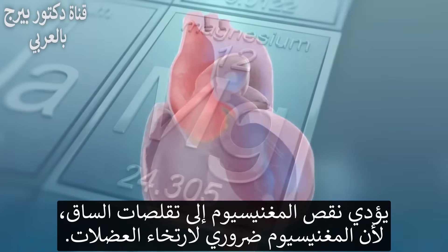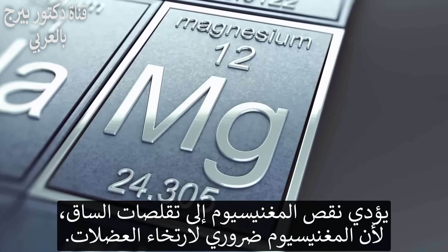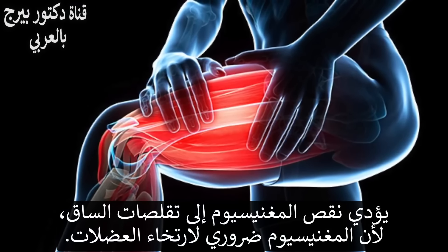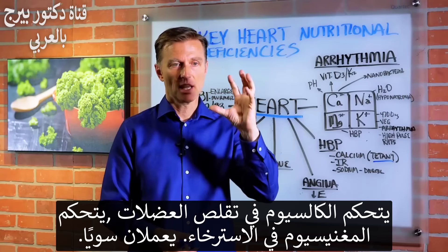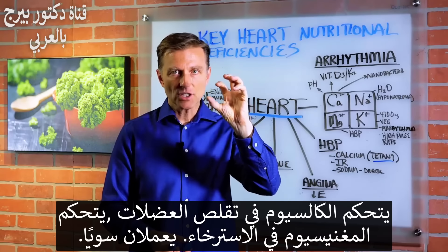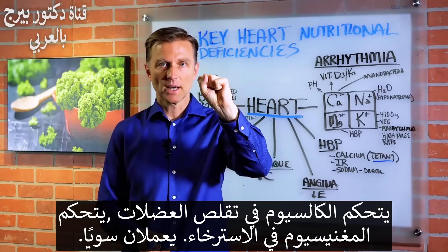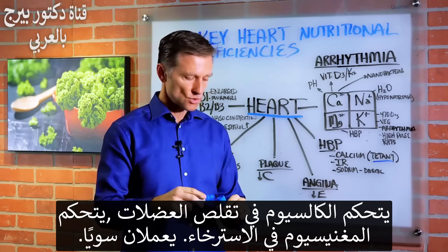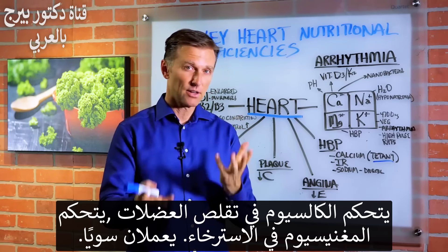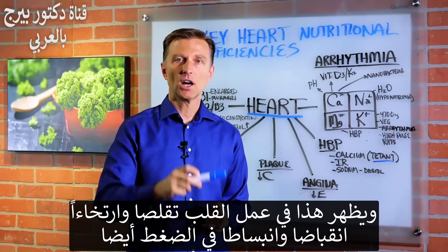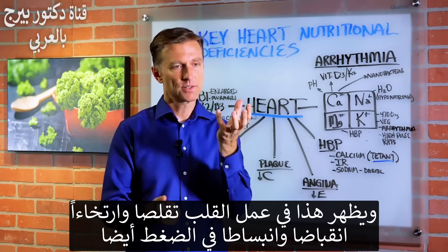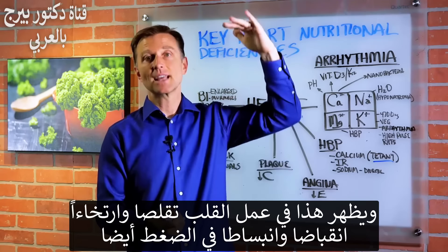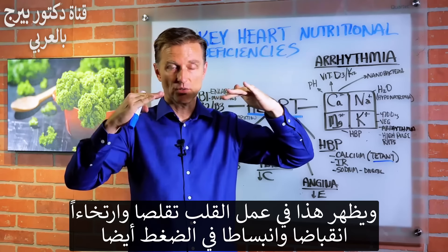If you're missing magnesium, you could have a leg cramp because magnesium is involved in relaxation of muscle. You have contraction of the muscle controlled by calcium and relaxation controlled by magnesium — they both work together. In the heart you have lub-dub, lub-dub: contraction, relaxation, contraction, relaxation — and you have this systolic-diastolic type pressure too.